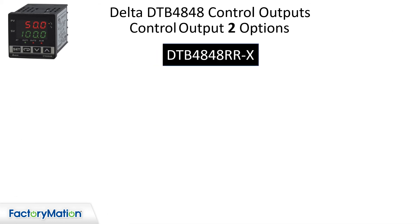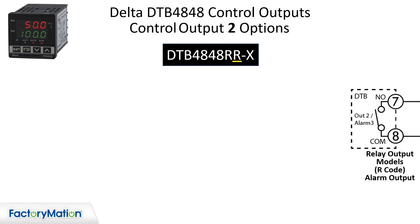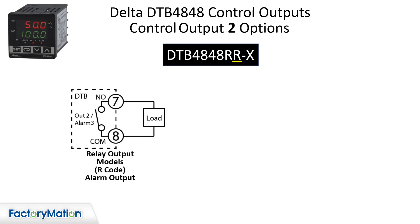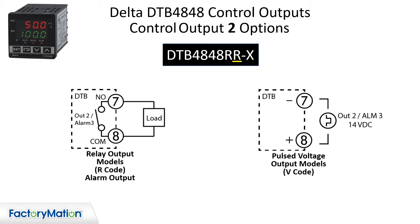Output 2 is the second alpha character, with a relay option that can be used as a control output or an alarm output contact. A solid state relay driver is also available.